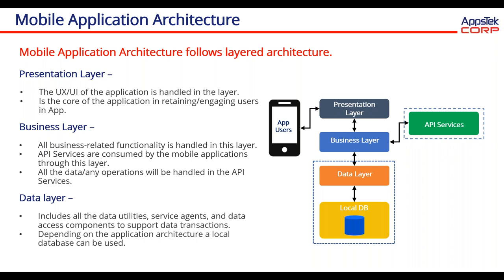The presentation layer provides the user with the presentation of the application where they will be interacting — this is the main core that engages users. The business layer provides business logic for the application; in this layer, API services are consumed by the mobile application, and all operations are handled here. The API services could be internal or external, third-party APIs. The data layer deals with storing data in a local database, data utilities, and other components to support the application like cache and other services.